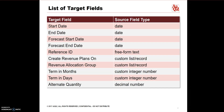Here's a table showing the target fields and their corresponding source field type. For example, if the target field is Revenue Allocation Group, the source field type would be Custom List or Record. If the target field is Reference ID, the source field type would be Freeform Text.